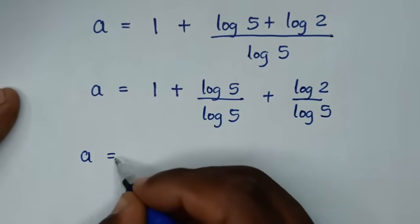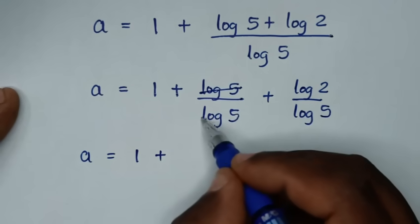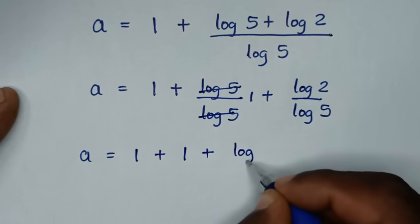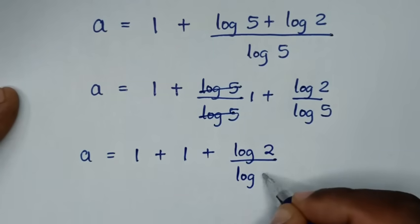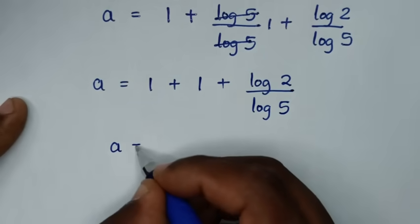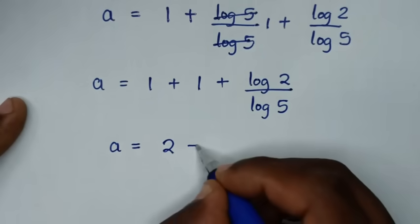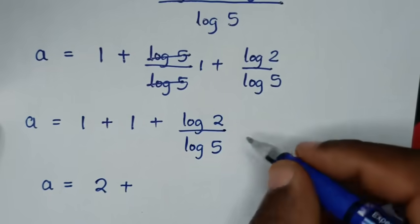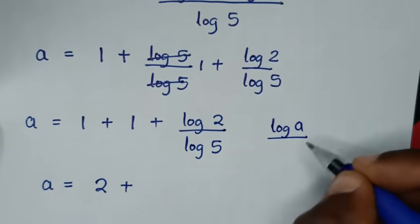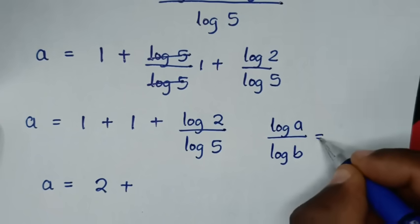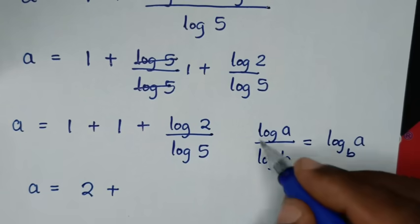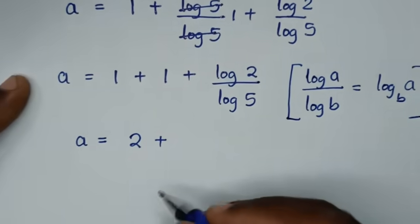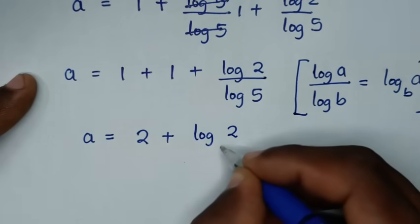Then a is equal to 1 plus log of 5 divided by log of 5, which is 1, so plus 1, plus log of 2 over log of 5. That gives us a is equal to 1 plus 1 which is 2, plus log of 2 over log of 5. This part is in the form of log a over log b, which equals log base b of a, so log of 2 over log of 5 is the same as log base 5 of 2. So the final answer is a is equal to 2 plus log base 5 of 2.